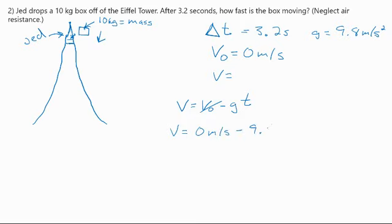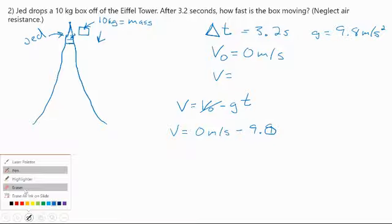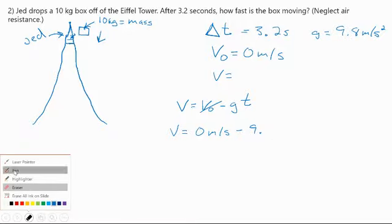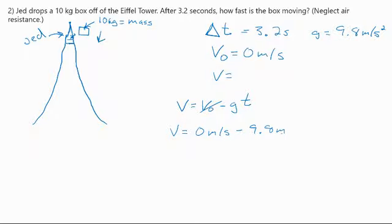Minus 9.8. Oops. Perfectly drawn eight. That's a lot harder to do this than you guys would think. Eight what? Meters per second squared. That's what that is. Times 3.2 seconds. And I'll put it over one. I don't know why I do it that way.